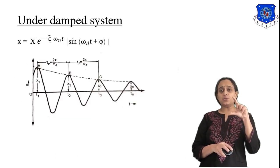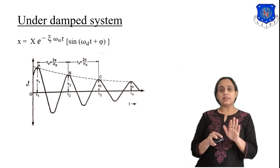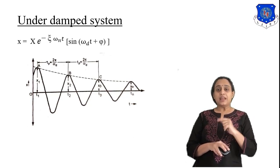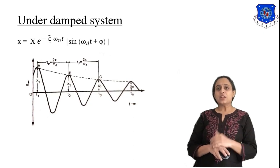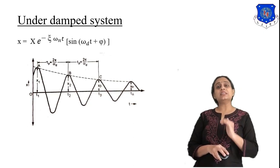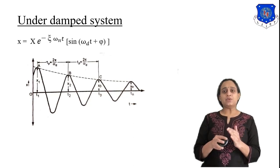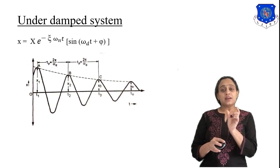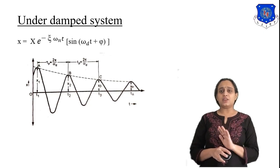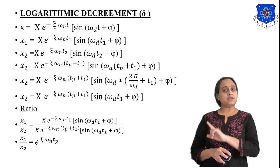Let us solve for logarithmic decrement. We have displacements x1 at time t1 and x2 at time t2, where the difference in time is the time period t_p, so t_p equals t2 minus t1 equals 2·pi divided by omega_d (since omega_d is the damped frequency). The standard equation is x equals X·e^(−zeta·omega_n·t)·sin(omega_d·t + phi). So x1 equals X·e^(−zeta·omega_n·t1)·sin(omega_d·t1 + phi), and x2 is written at time (t1 + t_p).